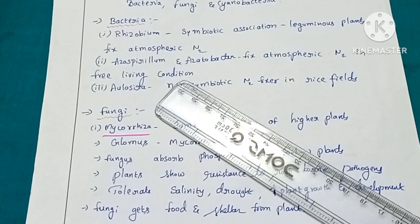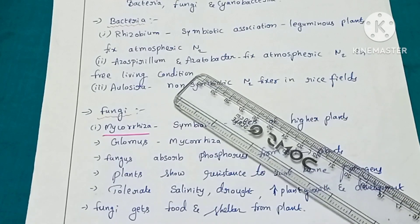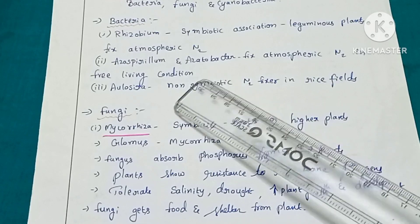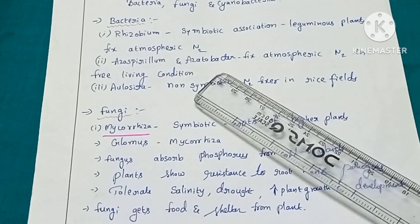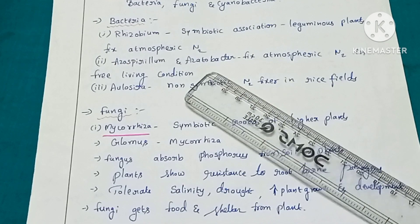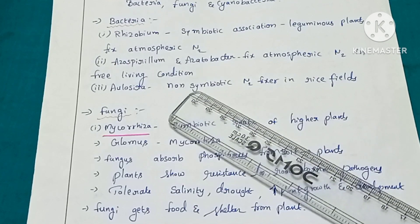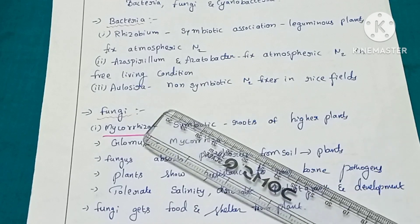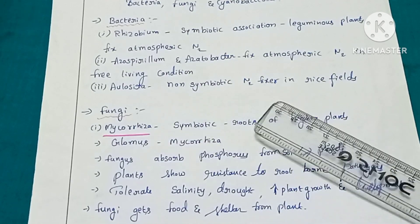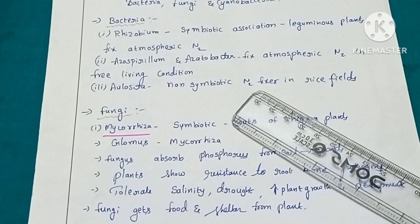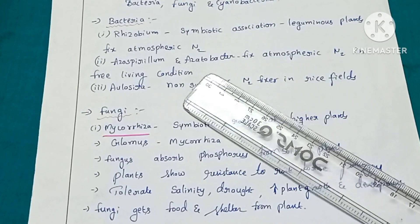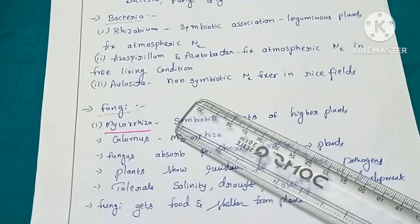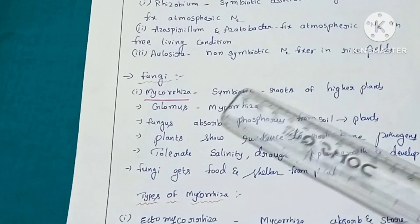Next are Azospirillum and Azotobacter. These bacteria live in free-living conditions and also help fix nitrogen in the soil, increasing soil fertility. They are associated with the roots of non-leguminous plants as well.